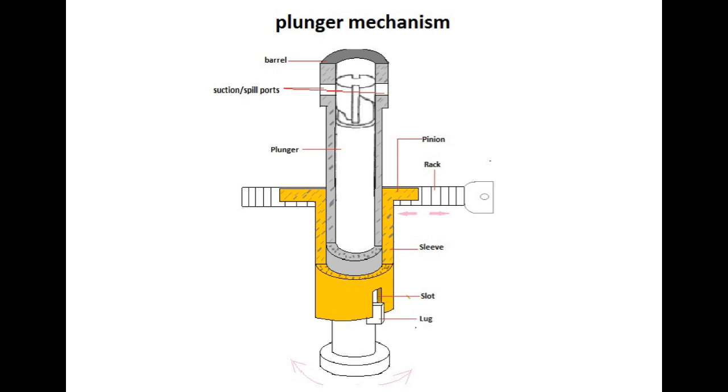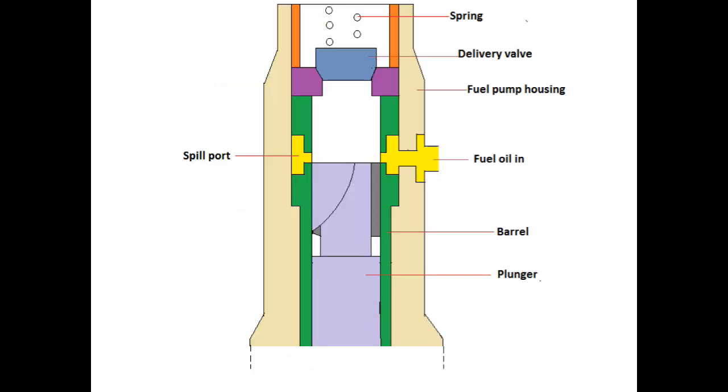As the rack moves it rotates the sleeve and the plunger. The barrel which is located in the fuel pump body is fixed and does not move. According to the drawing, when the plunger rotates in the barrel the position of the helical groove relative to the left hand port in the barrel changes. It is the relative position of the helical groove to this spill port which determines the quantity of fuel injected.